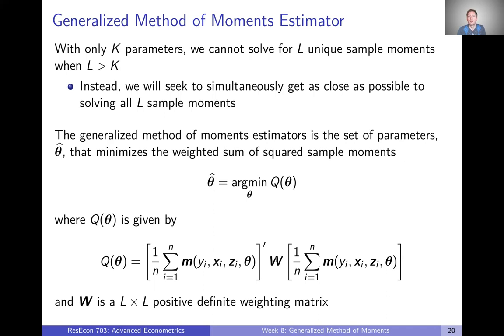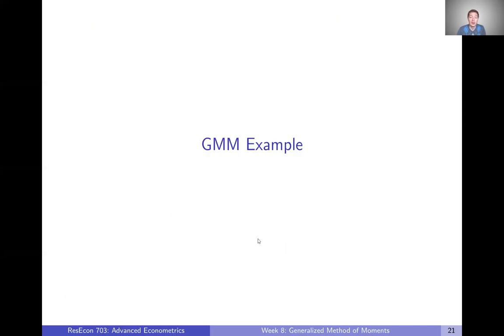We're going to need to say more about that weighting matrix, but let's first look at an example of GMM. Then we'll talk about some of the properties of the GMM estimator. And then finally, we'll think more about that weighting matrix to define the optimal weighting matrix and ultimately the optimal GMM estimator. But first, let's work through an example of GMM to help fix ideas and highlight the importance of this weighting matrix.